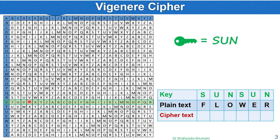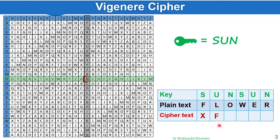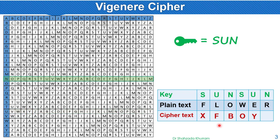We highlight the intersections. Using key S and plain text F vertically — their intersection gives us the cipher letter X. Then key U and plain text L gives F. Then N and O gives B. Then S and W gives O. Then U and E gives Y. Then N and R gives E. So the ciphertext is X, F, B, O, Y, E.